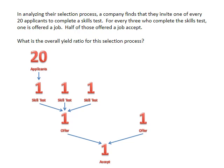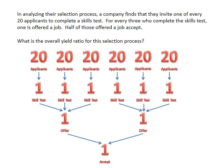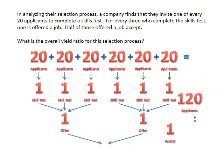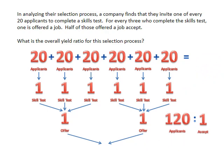Once you have all your ratios listed, you need to fill in the remaining items to complete the full selection process. And finally, you need to add up the total applicants to get the overall yield ratio. In this example, your final yield ratio is 120 to 1.